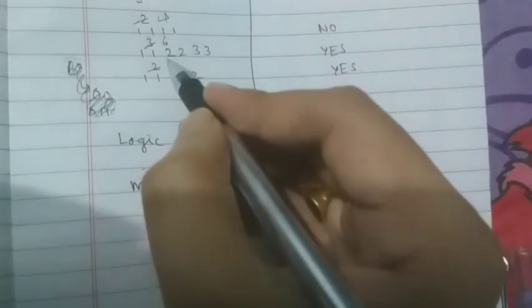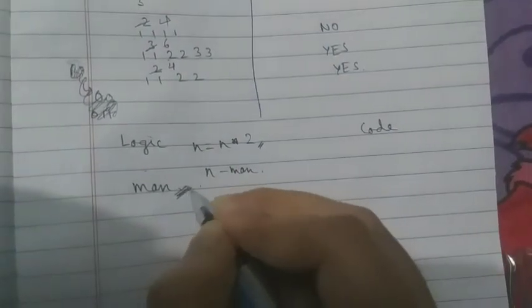Since the array is of size n×2, let's multiply n by two for convenience. So n becomes four, six, or four depending on the example. Then n-minus-max gives us the count of elements not equal to the max-frequency element. For example, 6 minus 2 equals 4 elements not equal to one, and 2 elements equal to one.